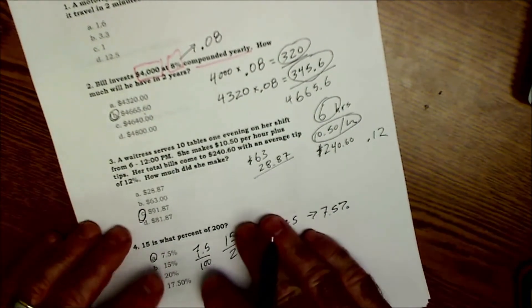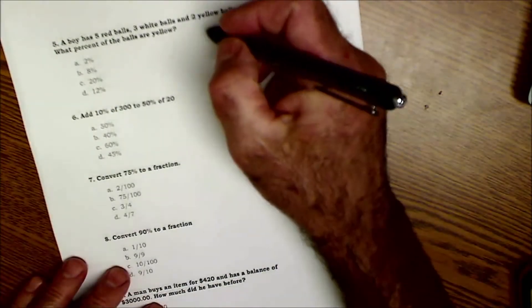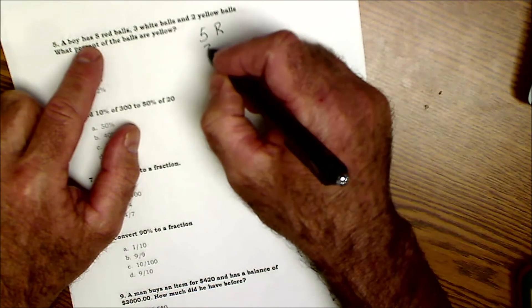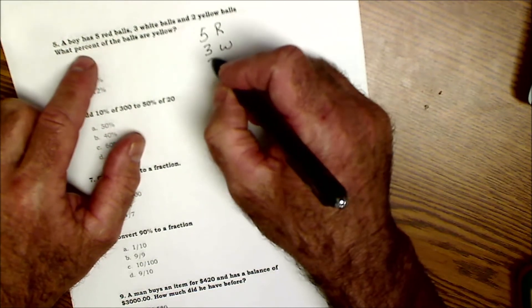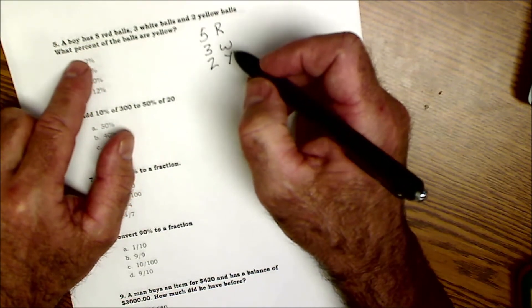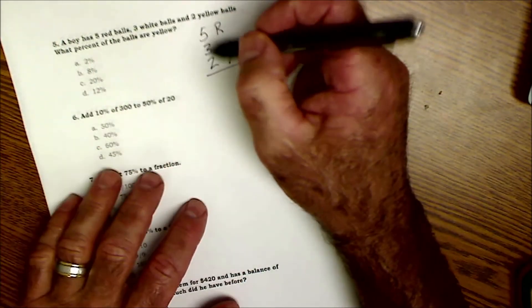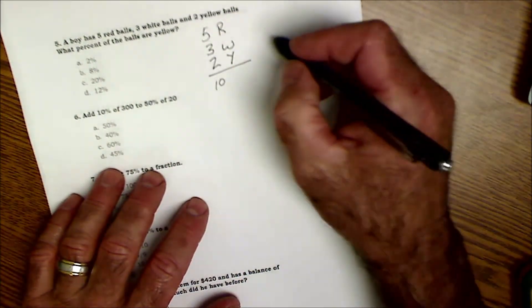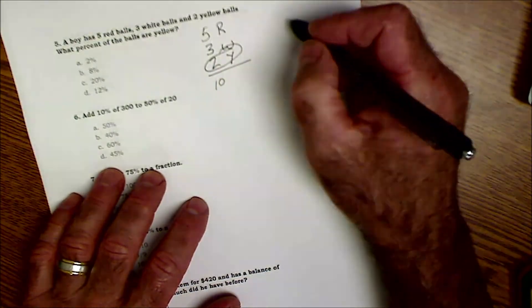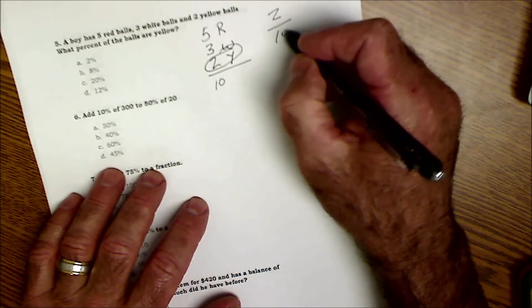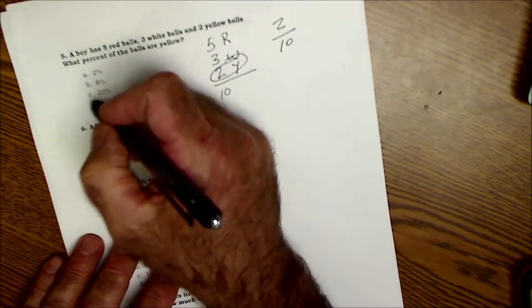Turn the page. Number five: a boy has five red balls, three white balls, two yellow ones. What percent of the balls are yellow? So you've got to figure out the total, so the total is 10. What percent are yellow? It's going to be what you want over the total: 2 out of 10, or 20%.